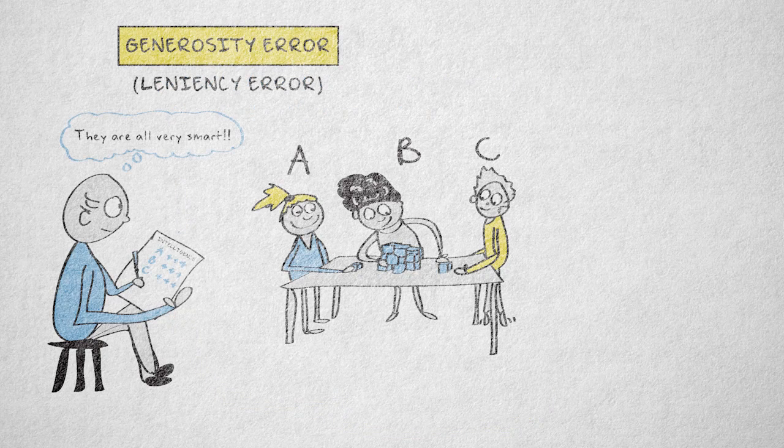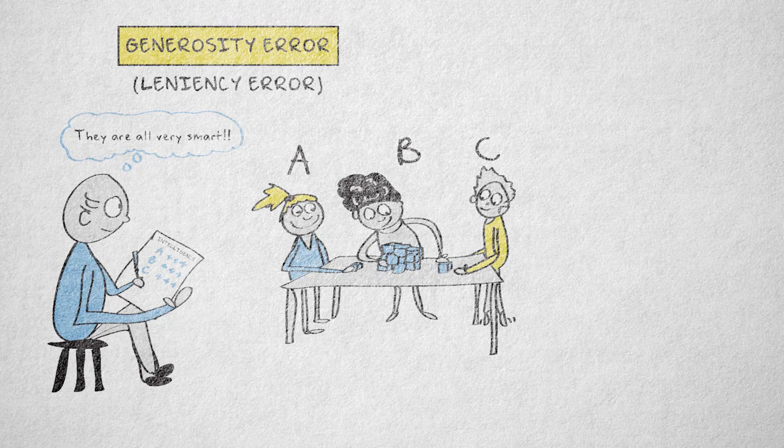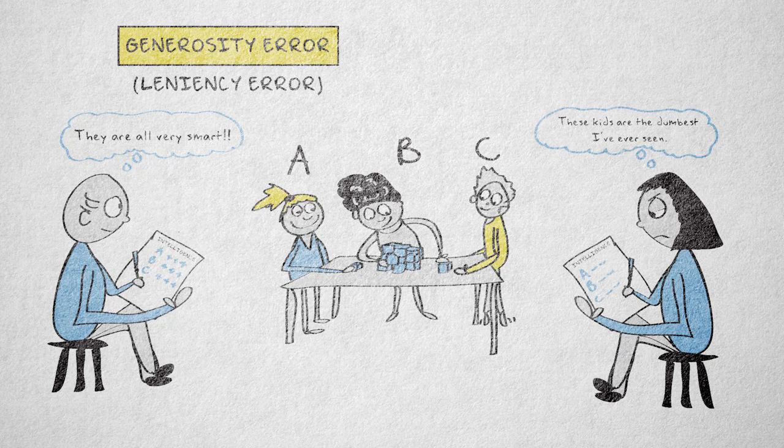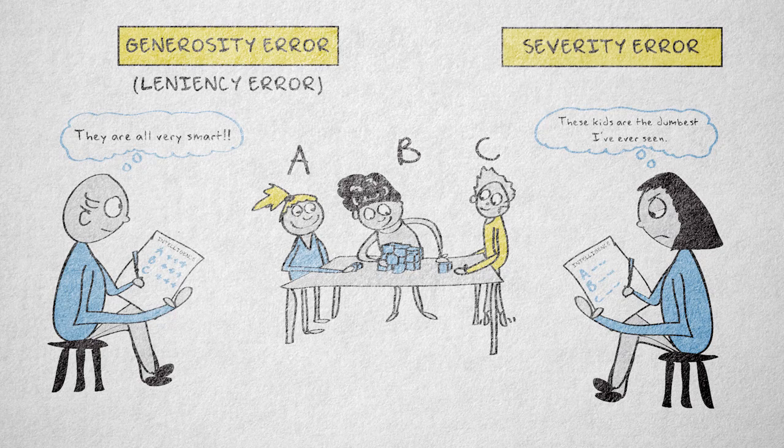Generosity error, or leniency effect, occurs when the rater is overly positive or kind in the ratings. The opposite, a systematic bias towards very strict or negative rating, is referred to as a severity error.